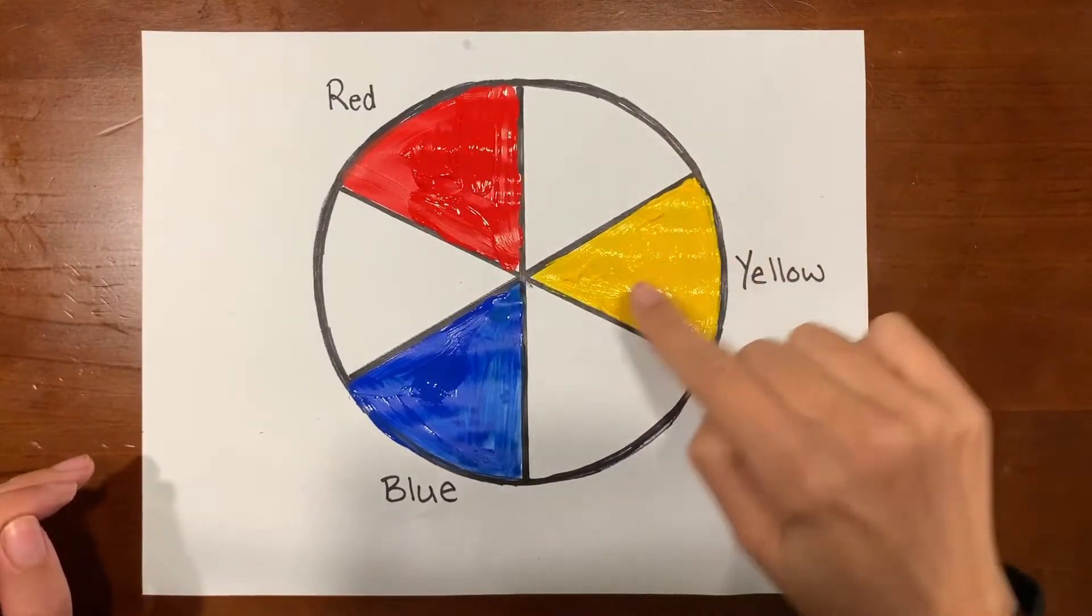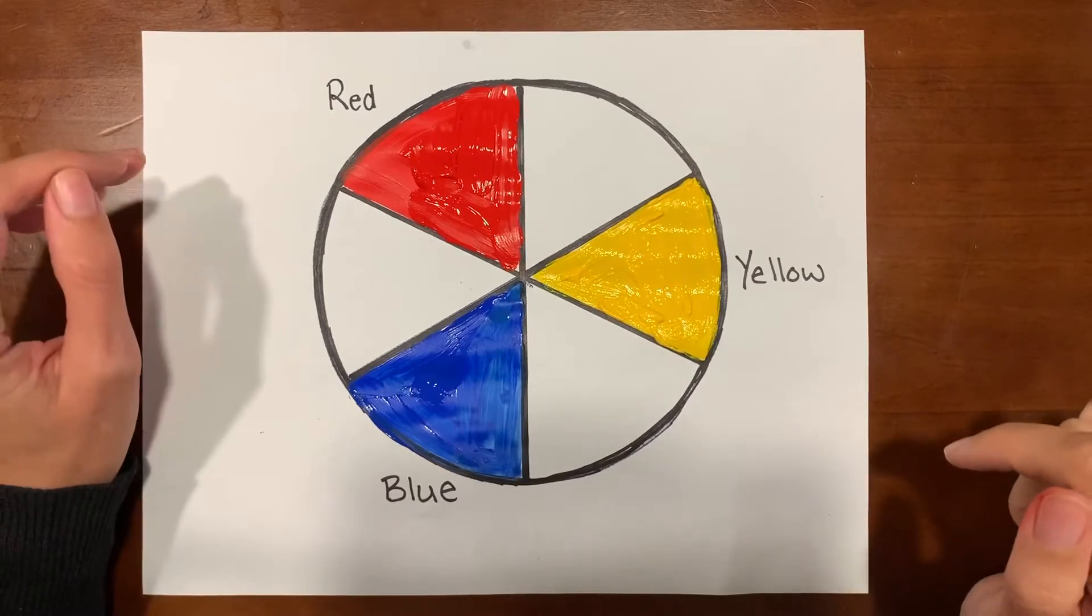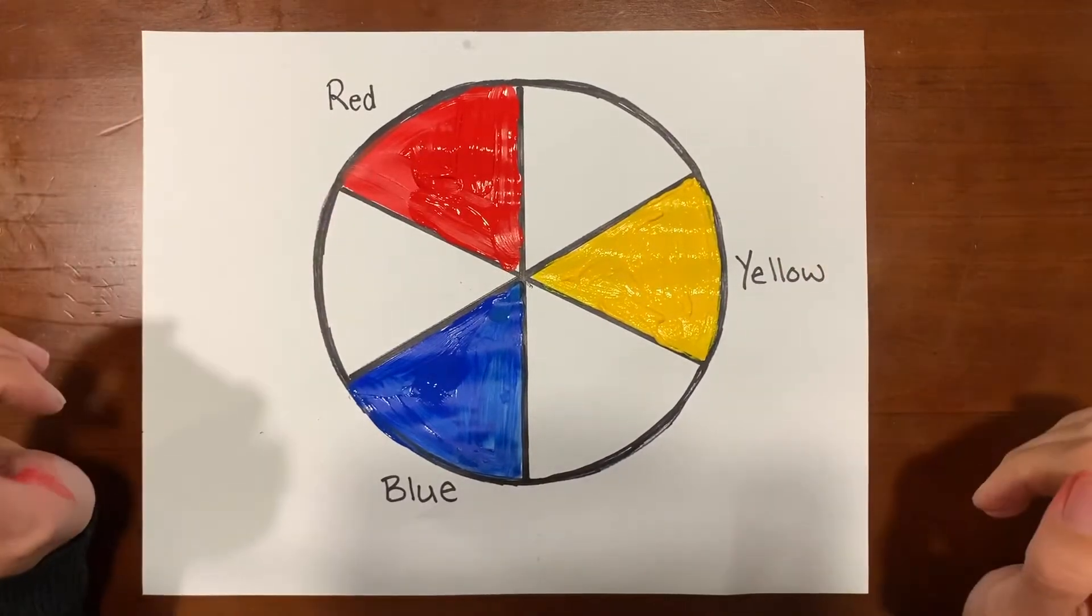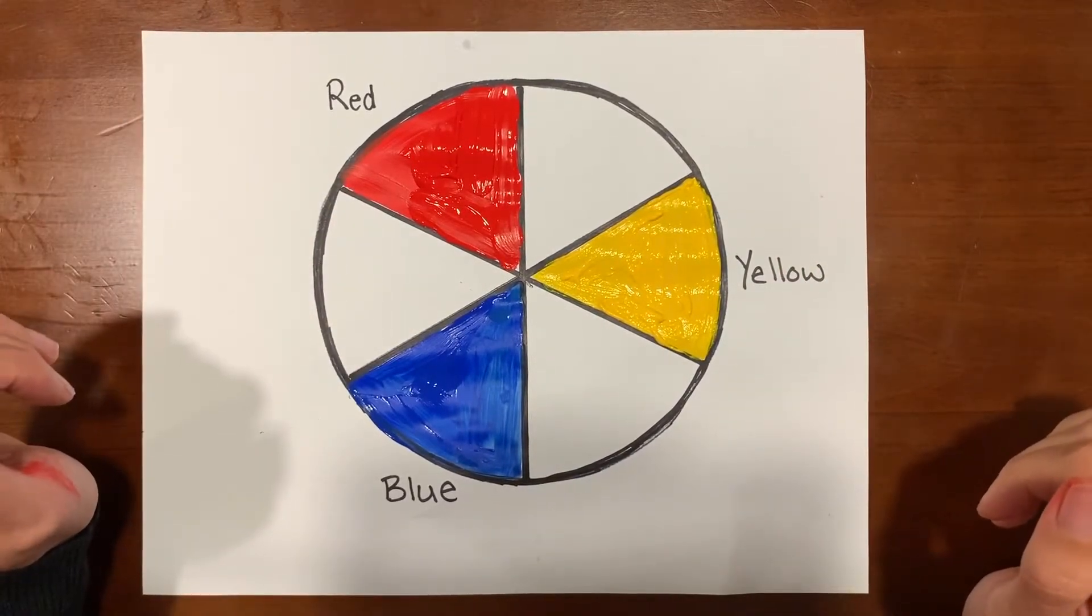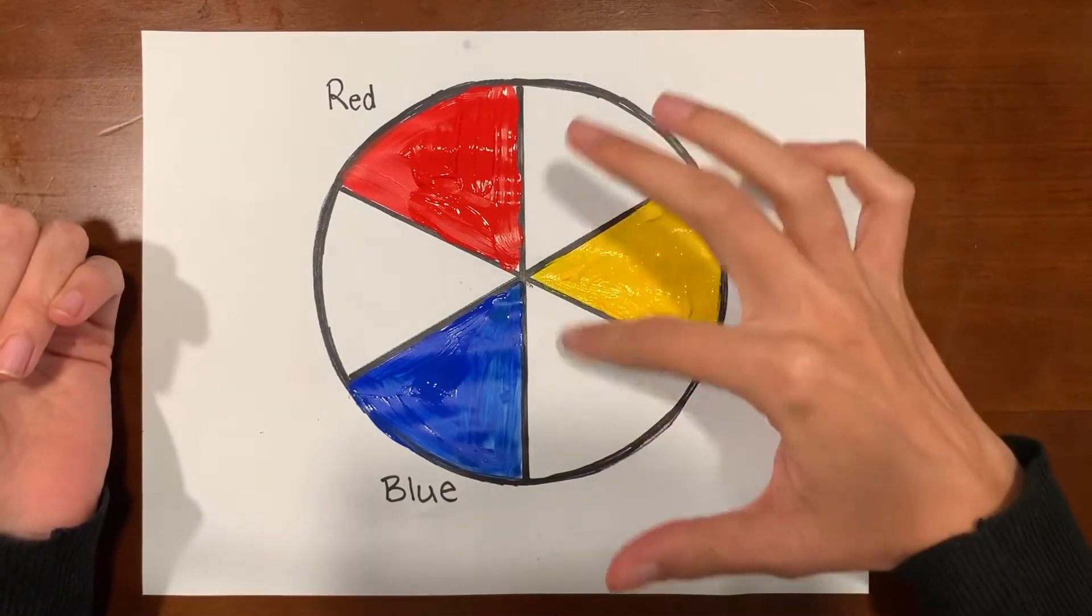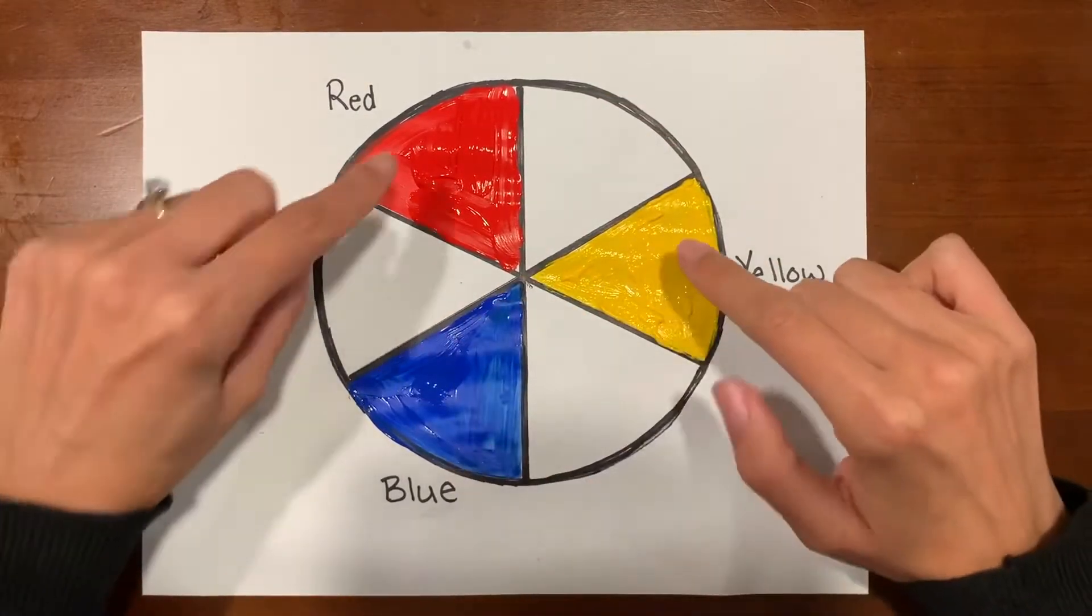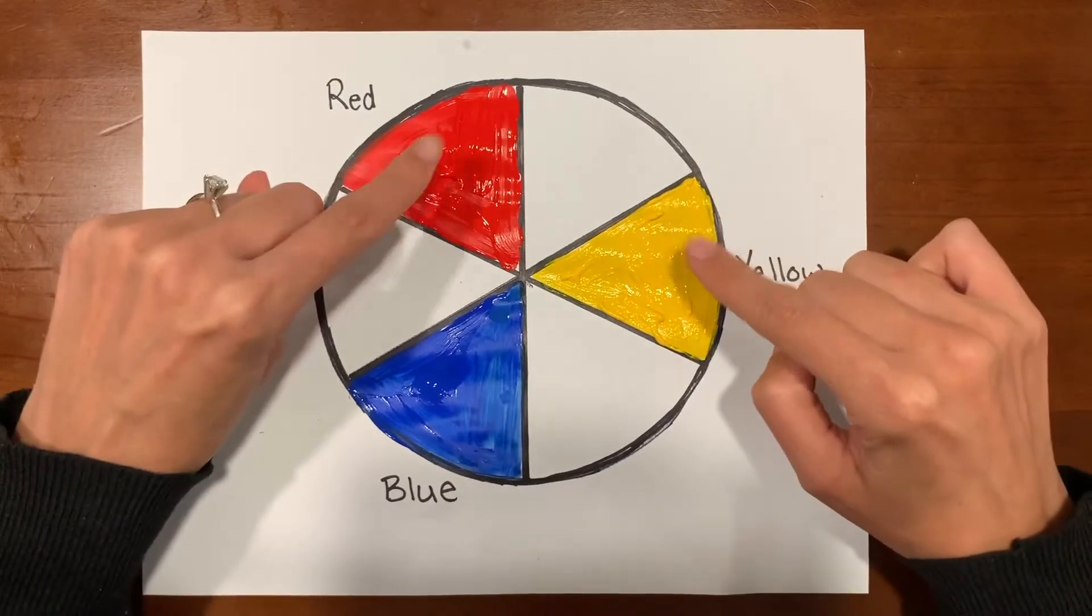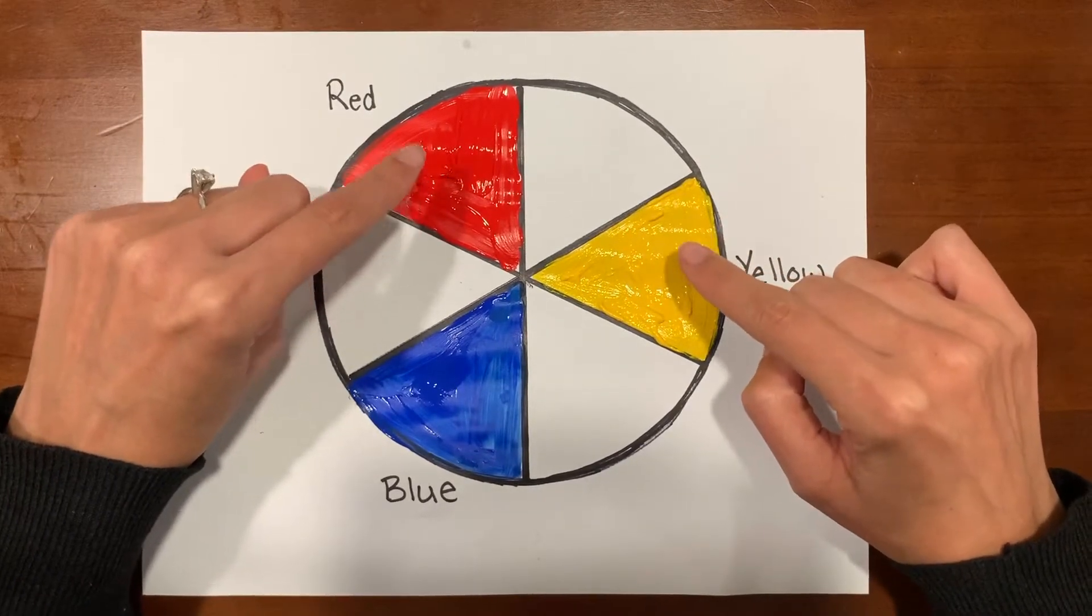Now red, yellow, and blue are called primary colors because no other colors can be mixed to make them. Next we're going to learn about secondary colors, and secondary colors happen when you mix two primary colors together to make a new color.